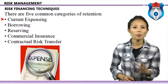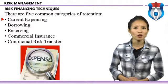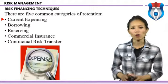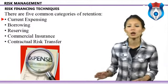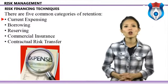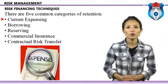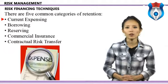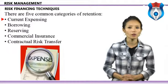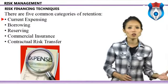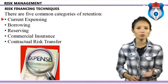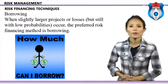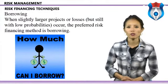There are five common categories of retention. Current expensing is appropriate when the probability of loss and expected loss value are relatively low — small costs are expensed on the current income statement. Liquidity involves a special fund set aside to pay small investments or claims; these expenses are taken as a tax-deductible expense on the income statement. Borrowing is used when slightly larger projects or losses with low probabilities occur.